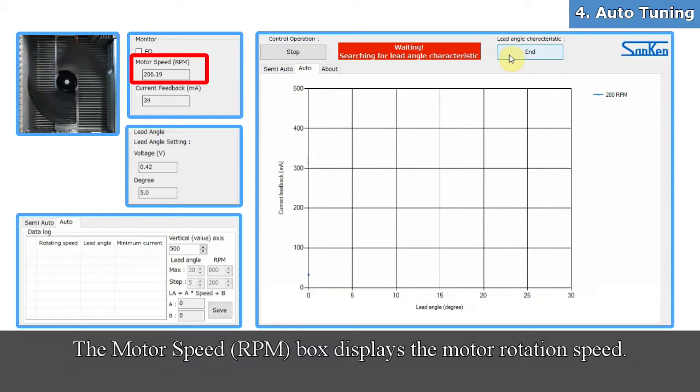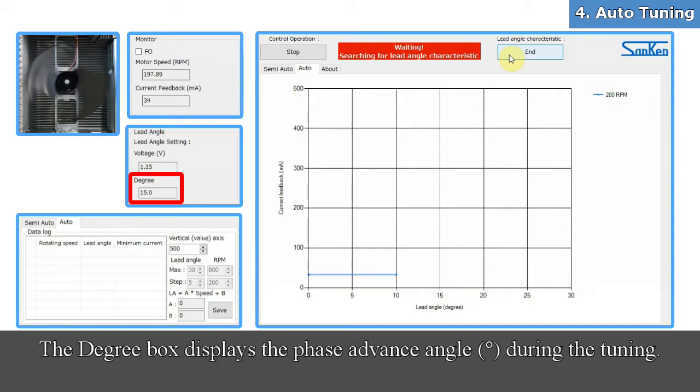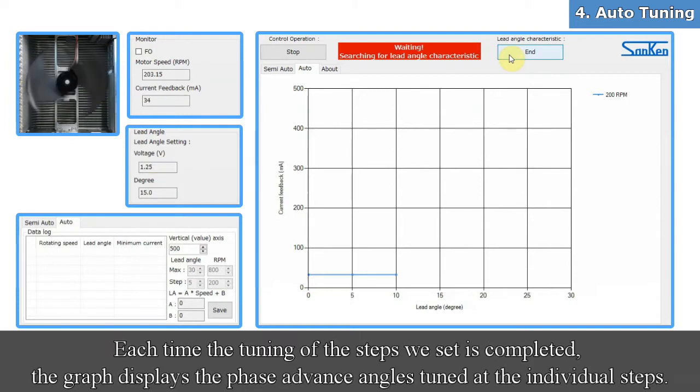The motor speed box displays the motor rotation speed. The current feedback box displays the feedback current. The degree box displays the phase advance angle during the tuning. Each time the tuning of the steps we set is completed, the graph displays the phase advance angles tuned at the individual steps.